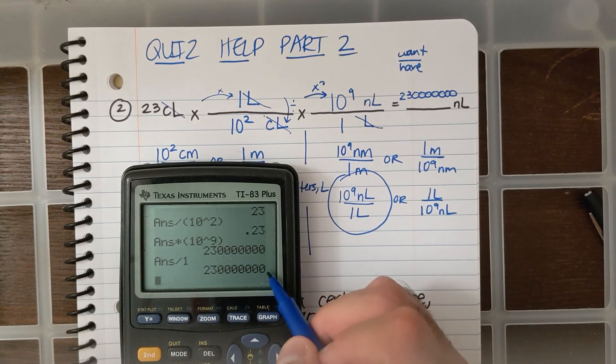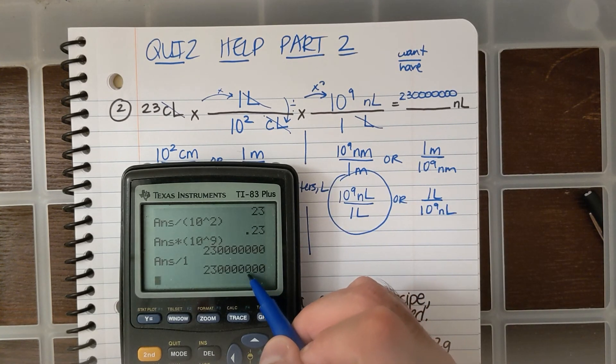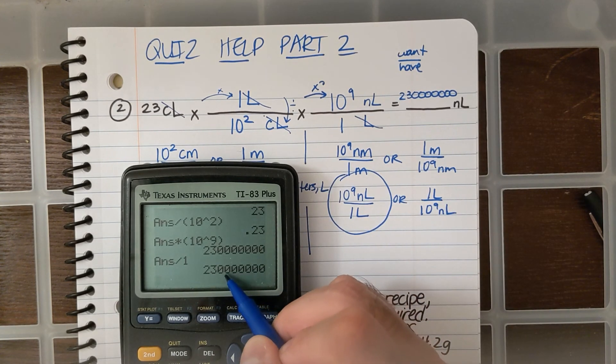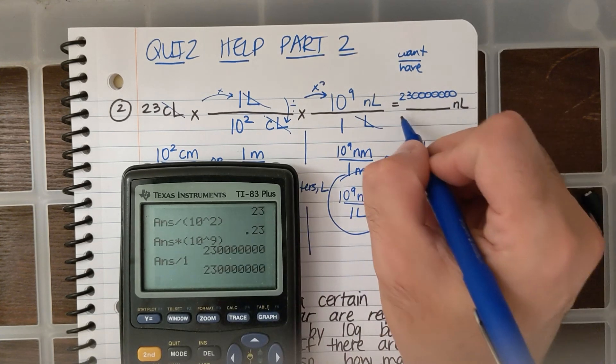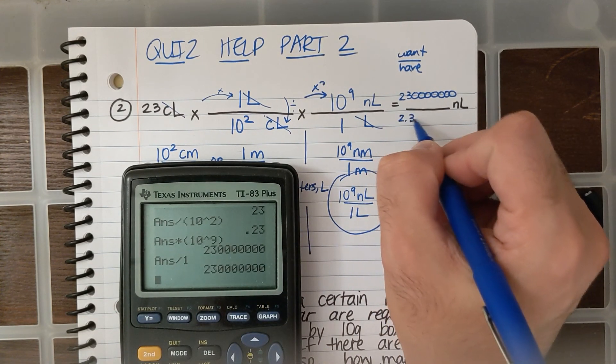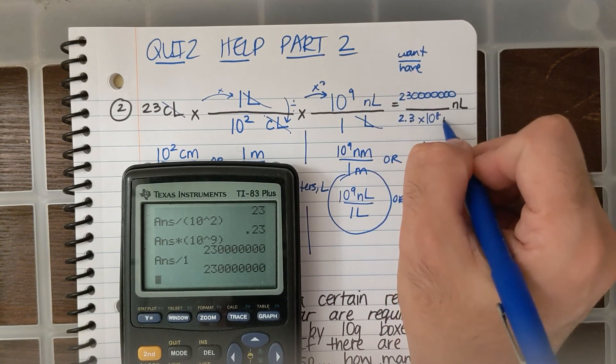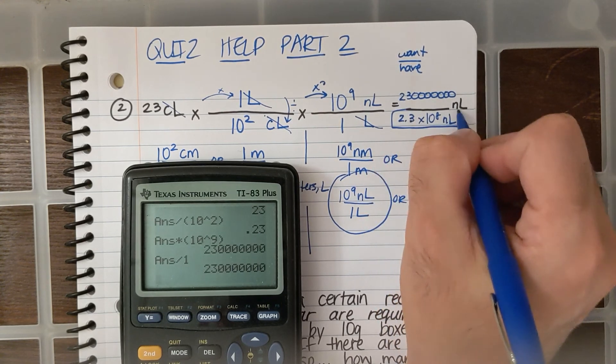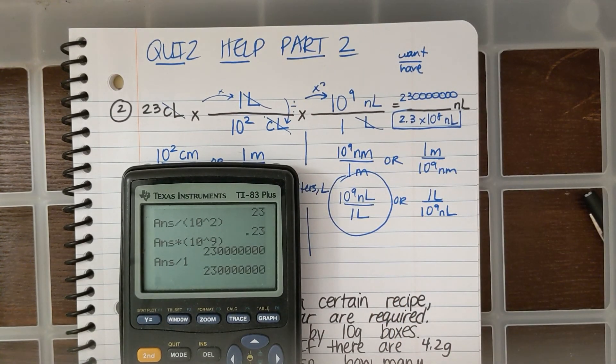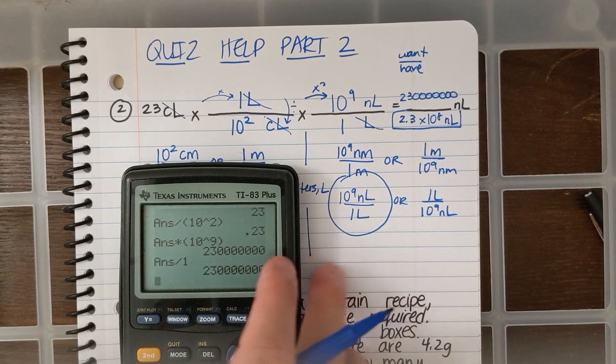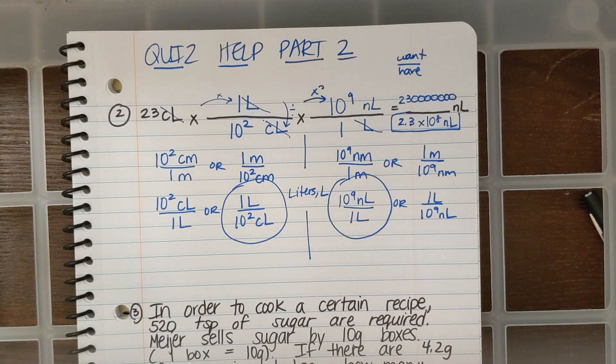So, if I want that in scientific notation, it'll be 1, 2, 3, 4, 5, 6, 7, 8. 2.3 times 10 to the eighth nanoliters. And that'll be another question on your quiz that you have to convert by using two conversions.